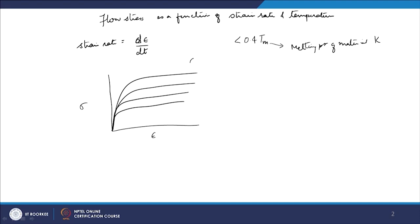The temperature is constant here — all curves are at constant temperature, some temperature more than 0.4 Tm. The difference between all these flow stress curves is that they are at different strain rates. From their flow stress values I can say that ε̇₄ > ε̇₃ > ε̇₂ > ε̇₁. So, lower the strain rate, the lower the flow stress; higher the strain rate, the higher the flow stress.